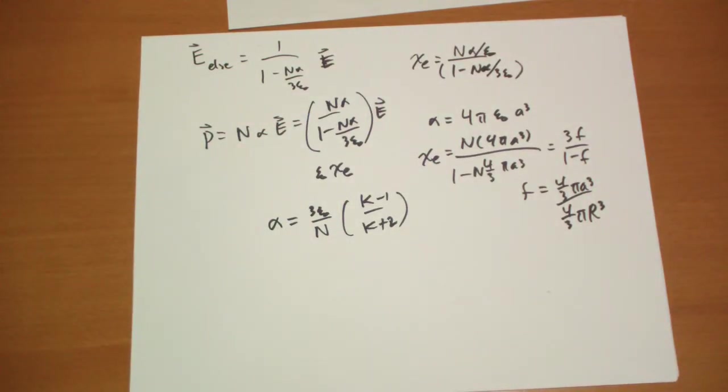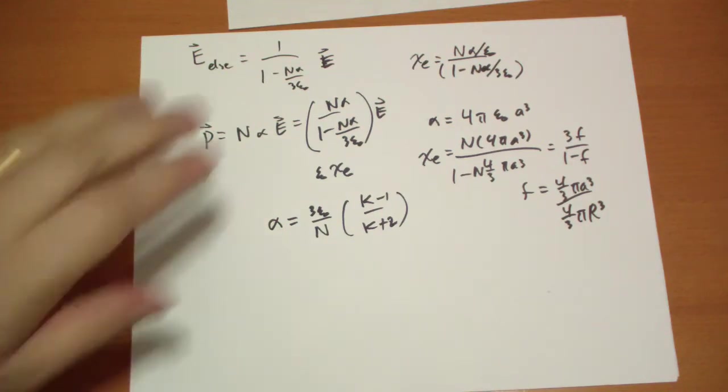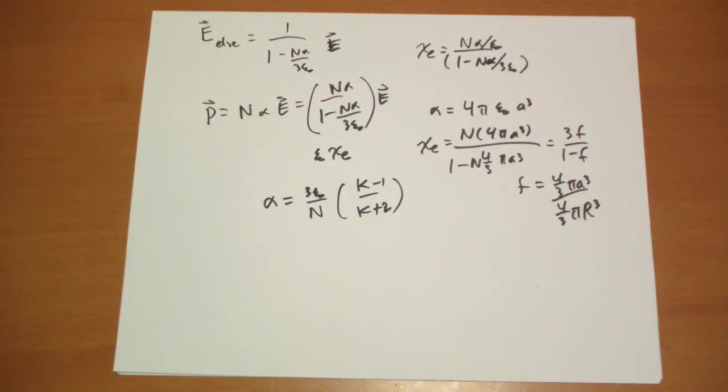But it is really cool, in fact, that the formula that we normally have is that alpha equals 3 epsilon-naught over N times k minus 1 over k plus 2. That's the formula that people tend to use. K is easily measured. You just take a capacitor, measure its capacitance, then throw in the dielectric material, and voila, there's your k.